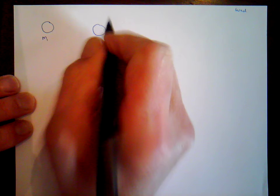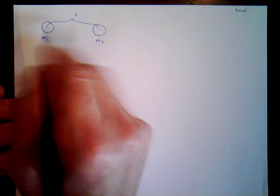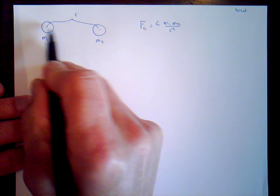This is mass one, and this is mass two, and they are a certain distance apart. I'll call this distance r. We have m1, m2, and that's the distance between them. Remember, the distances are always between the centers. The force of gravity between these two masses is g times m1 times m2 over r squared. So these two masses at that distance produce a force on each other equal to f.